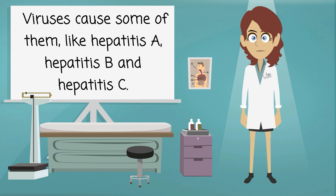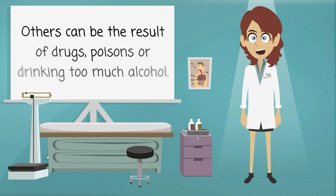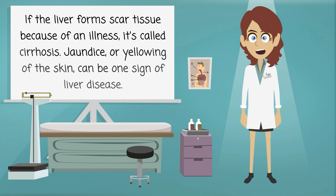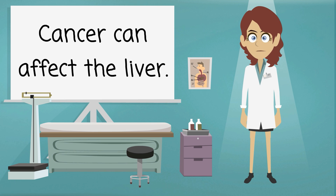Others can be the result of drugs, poisons, or drinking too much alcohol. If the liver forms scar tissue because of an illness, it's called cirrhosis. Jaundice, or yellowing of the skin, can be one sign of liver disease. Cancer can also affect the liver.